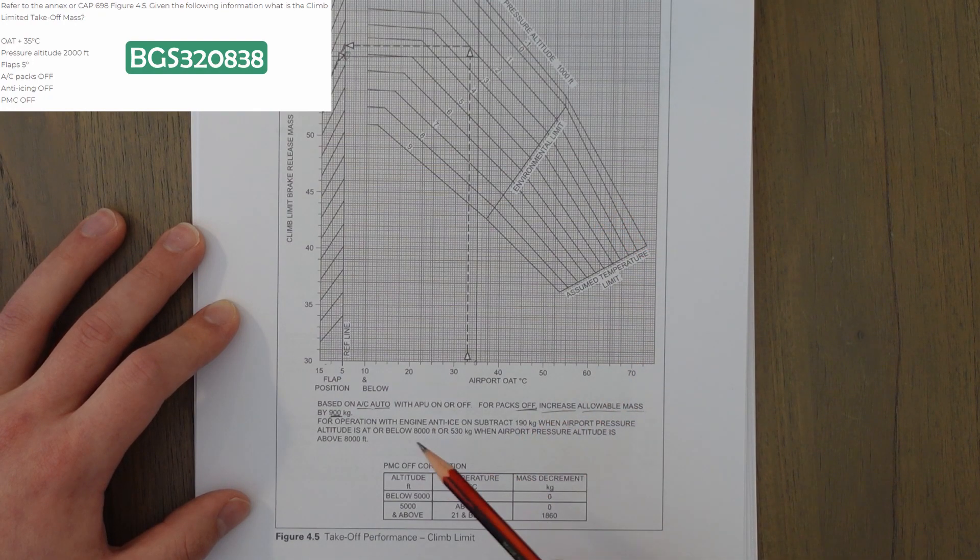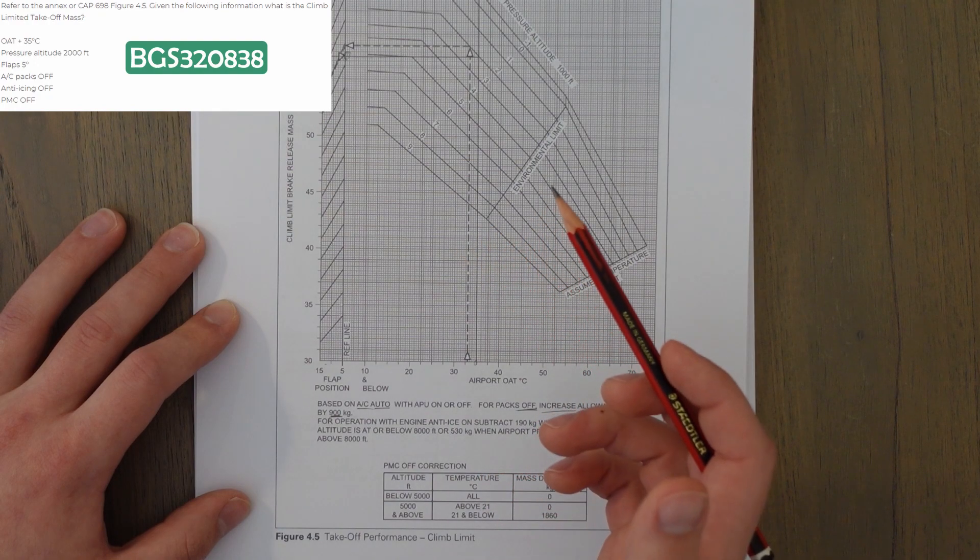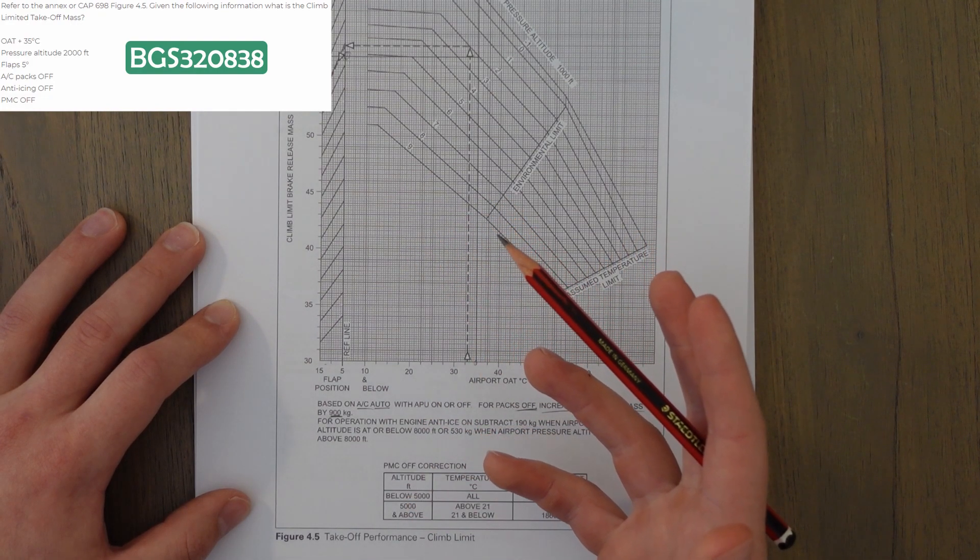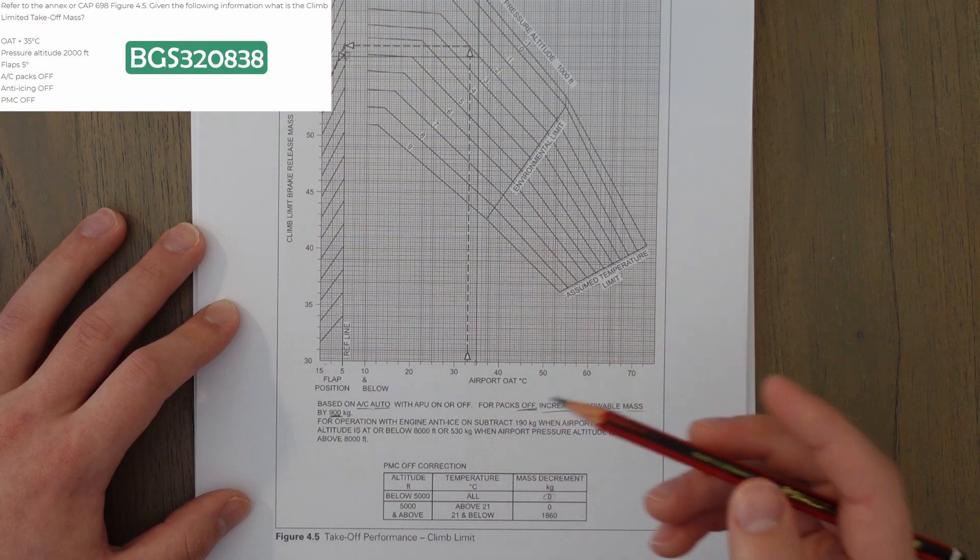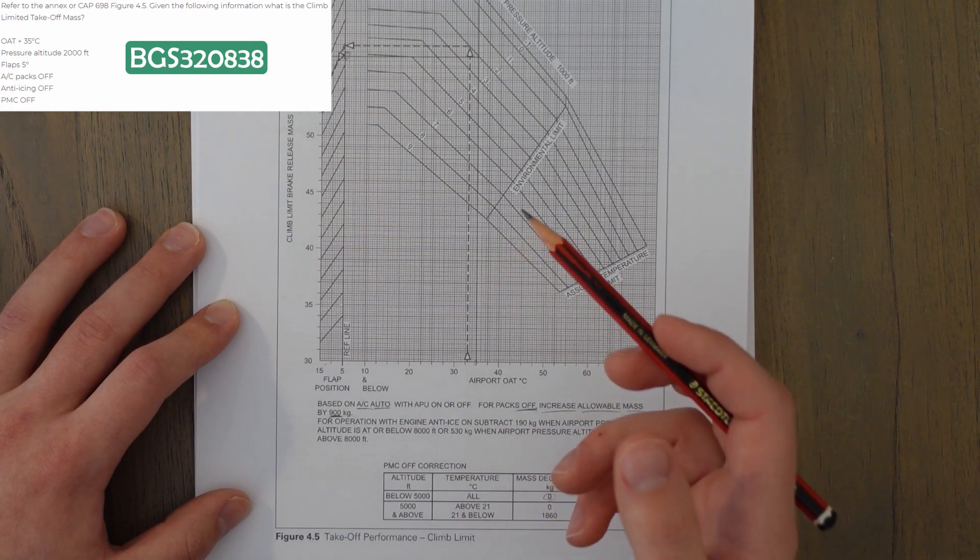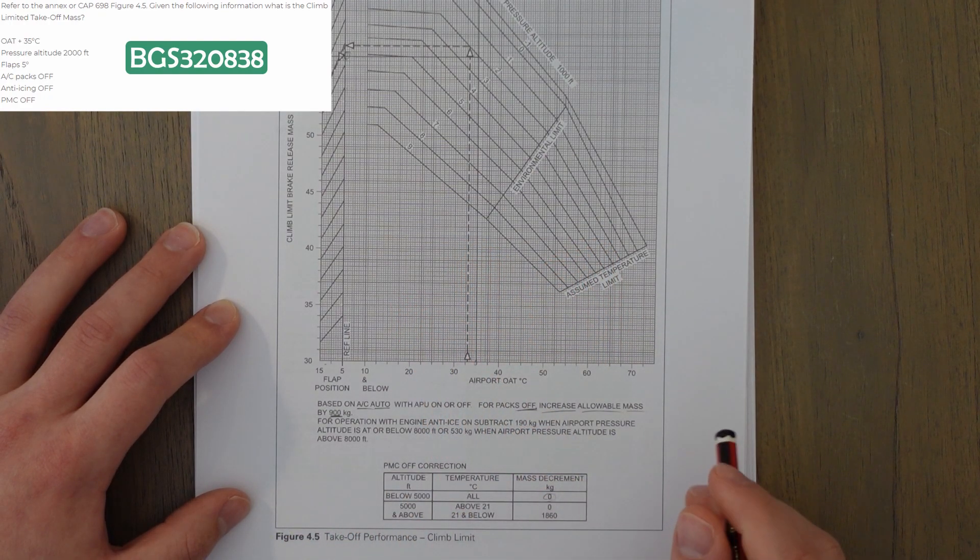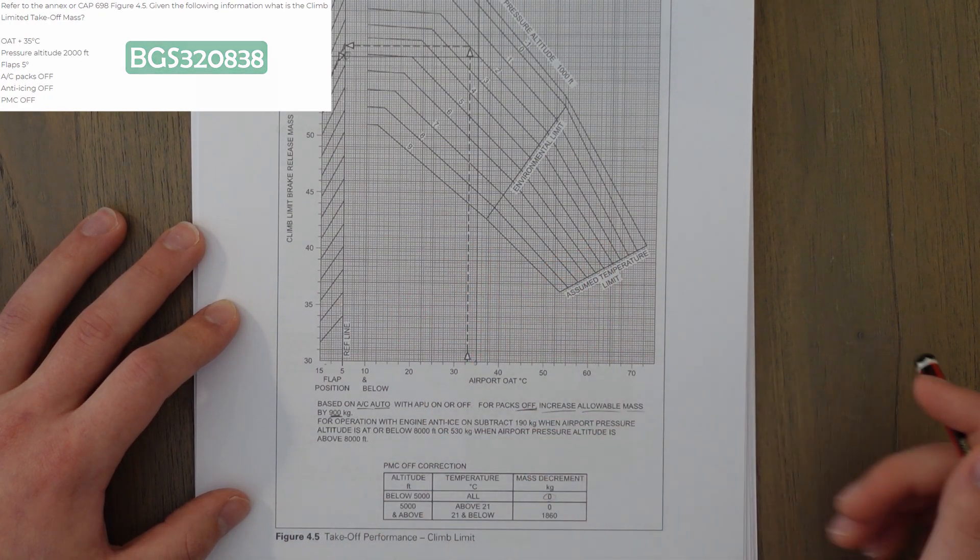The next correction is if the PMC is off, which is in our example. But when we're below 5,000 feet, we don't have to do any corrections. So, our final answer is 57,900 kilograms. So, just watch out for these notes. Make sure you read them and correct as appropriate.